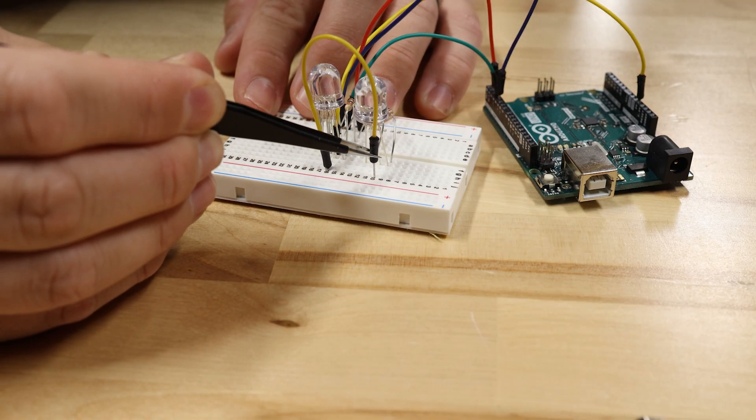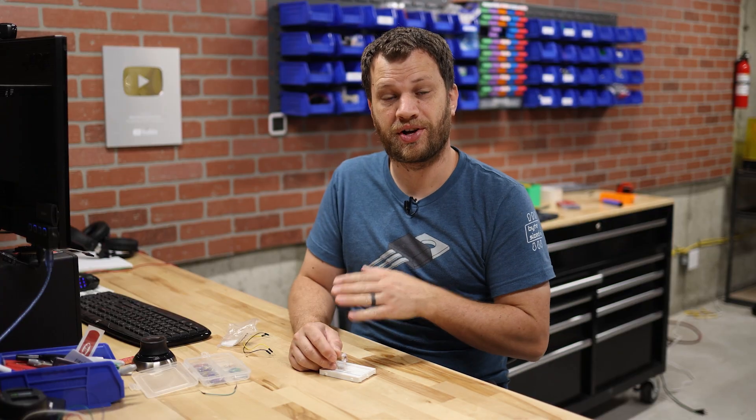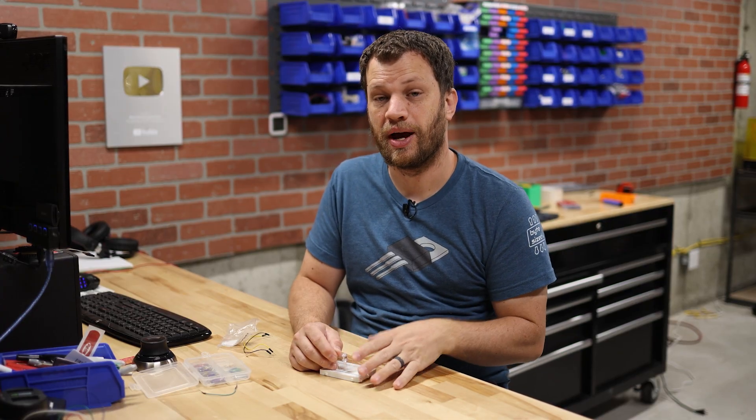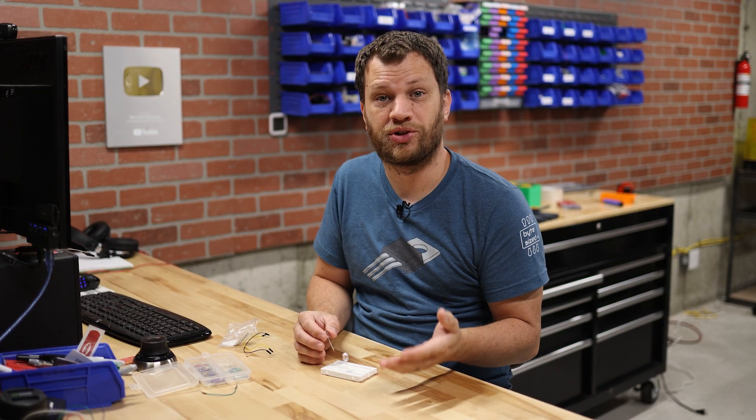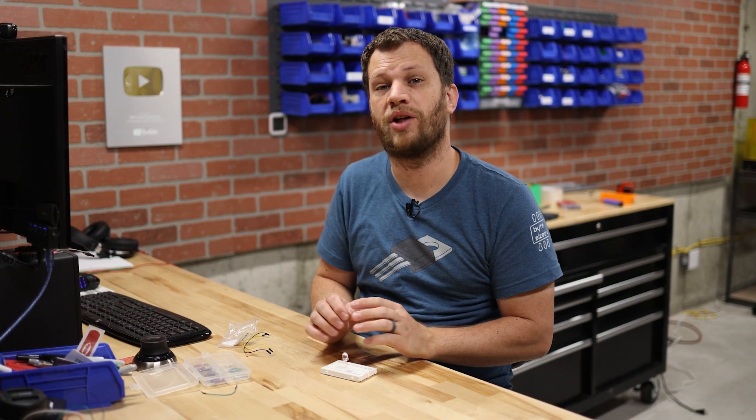But what do I do with the common anode? Do I connect it to five volts like I did the other one? Well, let's try that and see what happens. So now I have both common anodes connected to five volts, but when I try to turn on a single red LED they both come on. I'm not able to turn on a single LED. The whole color group turns on.